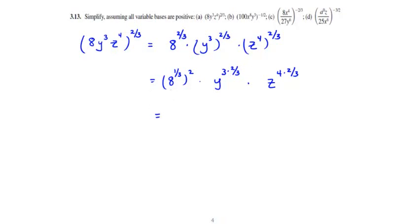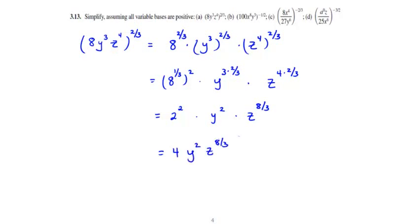We use the fact that 8 to the 1/3 power is the cube root of 8, which is 2. So we have 2 squared times y — multiplying the exponents gives y squared. The last term becomes z to the 8/3 power. This simplifies down to 4y squared z to the 8/3 power.